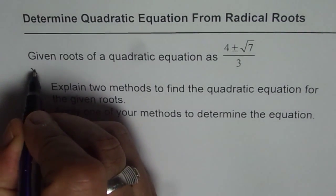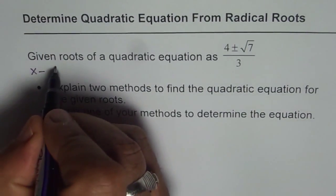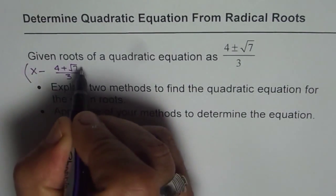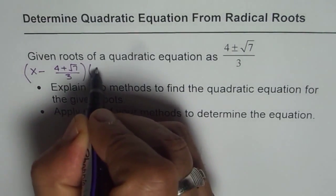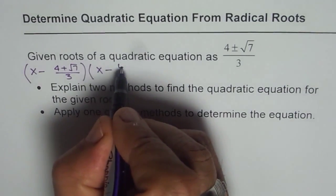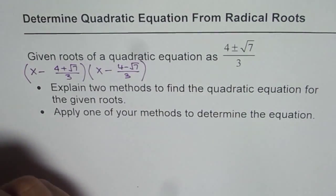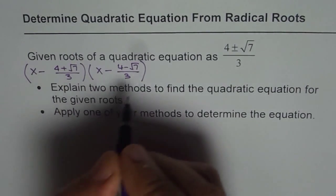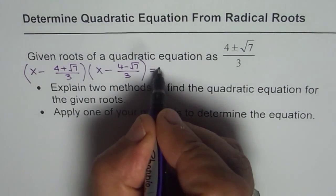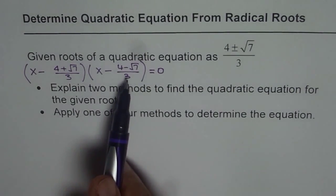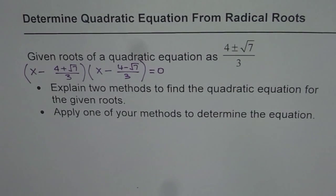The factors will be x minus one of these roots which is 4 plus square root 7 over 3, times x minus the second root which will be 4 minus square root 7 over 3. So this is one method, and that should equal 0. This is the first method which most of you can apply.